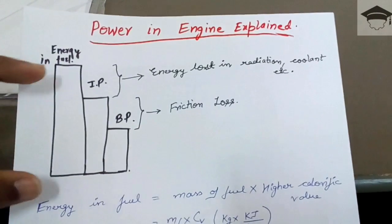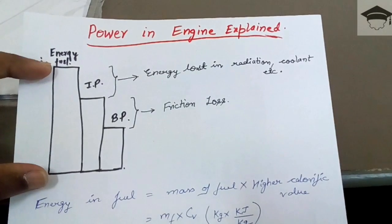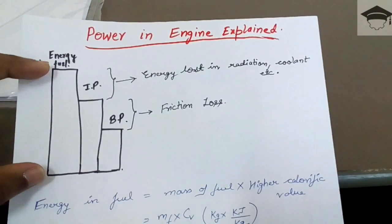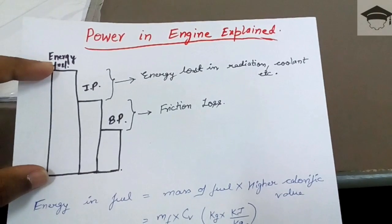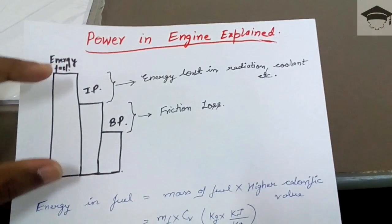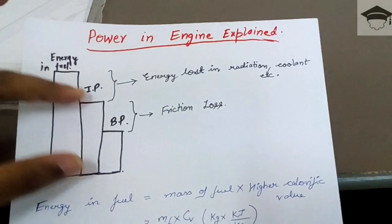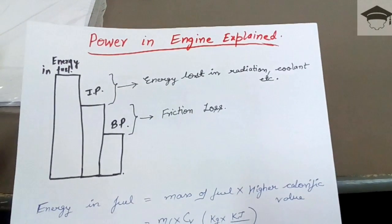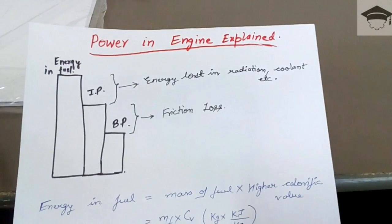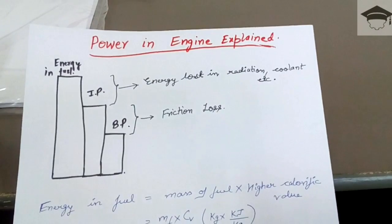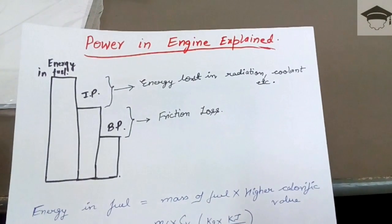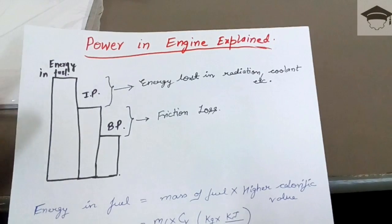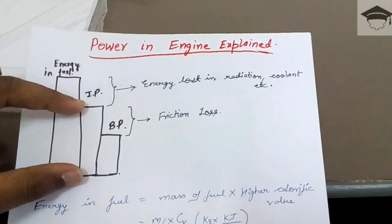Suppose this represents the energy contained in the fuel — whether it is gasoline, diesel, etc. This is the total amount of energy in the fuel. Now, this amount gets reduced because some energy is lost in the form of radiation from the cylinder to the surroundings. Also, the coolant which circulates to carry away heat takes part of the energy with it. What we are left with is known as indicated power, or IP.